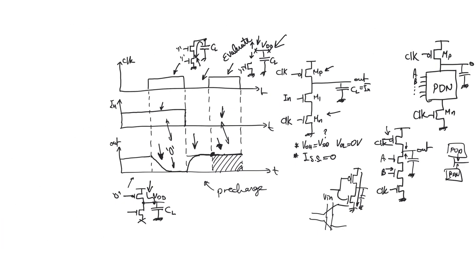There are three possible states for the output node: pre-charging, evaluating a zero, or evaluating a one. When pre-charging there is a path to VDD through MP; when evaluating zero there is a path to ground through the PDN and MN. The only unusual state is evaluating a one, where the output node is high-impedance, floating at VDD — a condition that must be carefully managed because it is sensitive to noise.